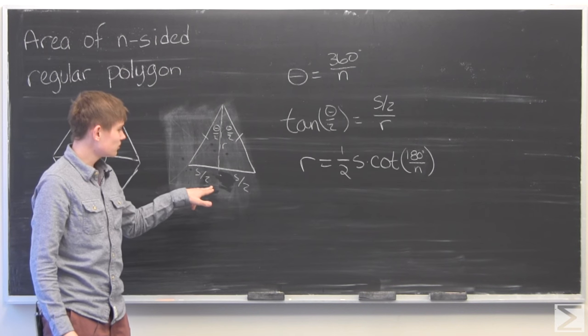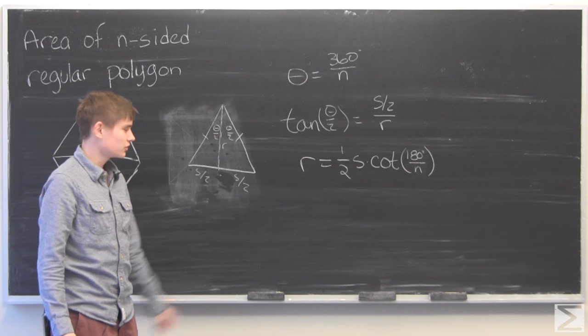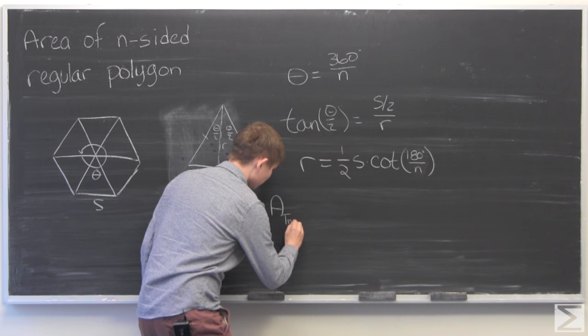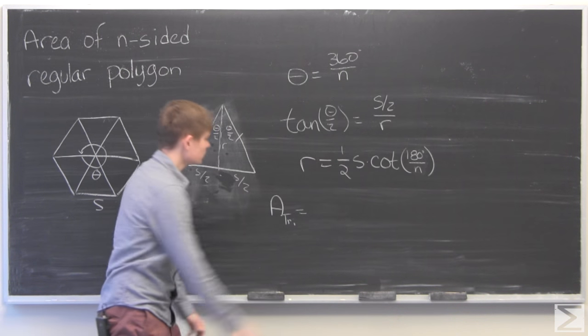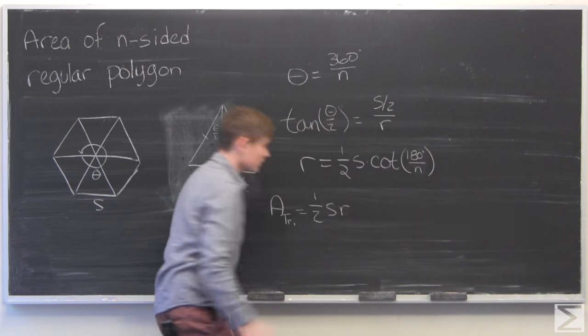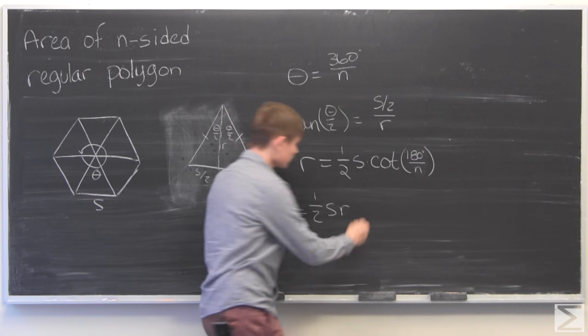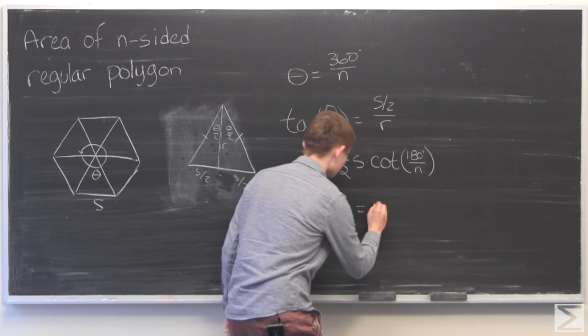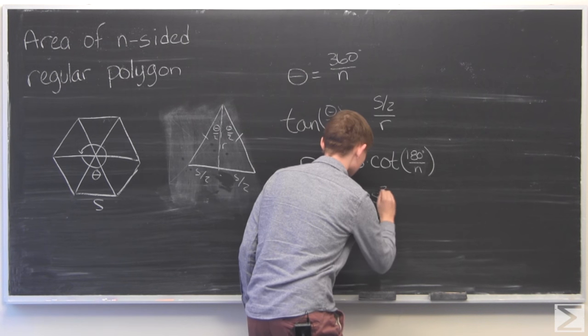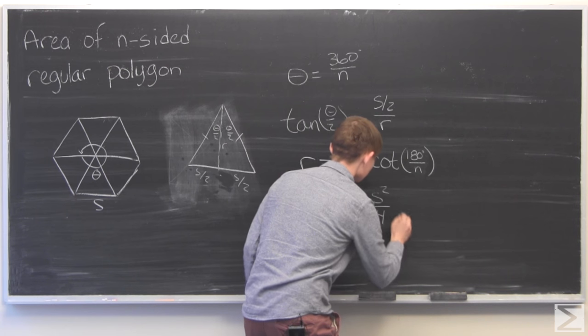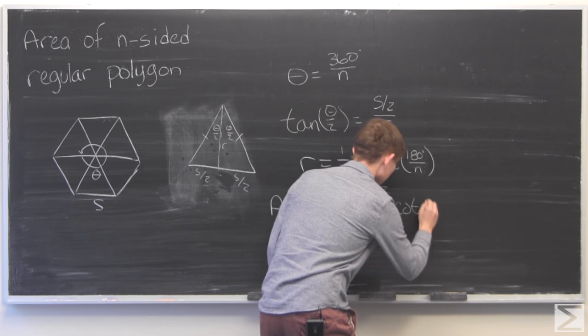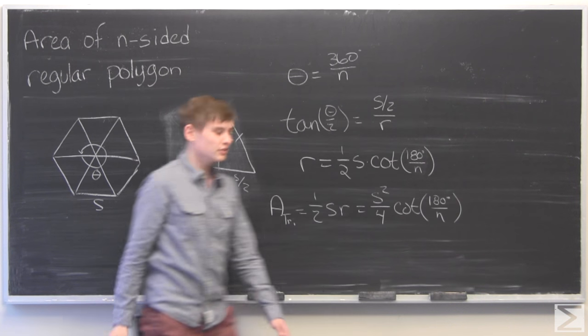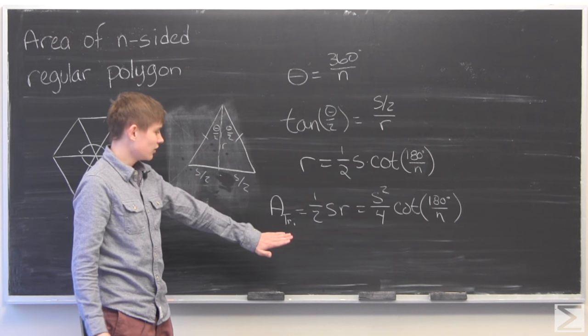So now we have R. We have to find the area of the triangle. And since the area of the triangle is equal to 1 half times S times R, we can plug in R. And we get that the area is S squared over 4 times the cotangent of 180 over N.